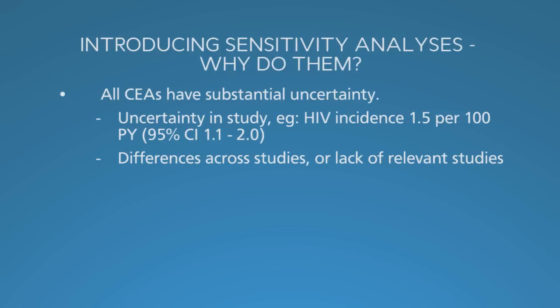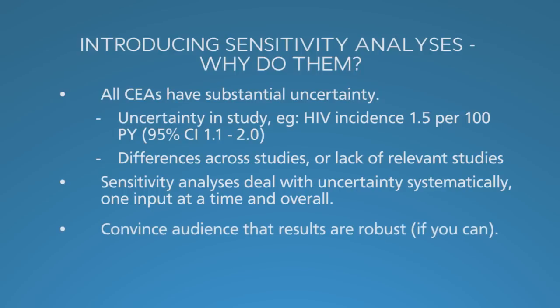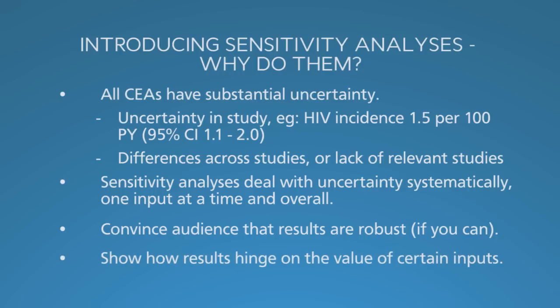This uncertainty in inputs can lead to large uncertainty in cost-effectiveness analysis results. Sensitivity analyses are the cost-effectiveness analysis version of 95% confidence intervals in empirical studies. Well-designed sensitivity analyses deal systematically with this uncertainty. Each input is considered in isolation and in combination with other inputs. Sensitivity analysis can convince audiences that results are robust — that the same basic conclusion holds despite uncertainty in the precise numerical findings — or, in contrast, that results depend on the value of certain inputs.